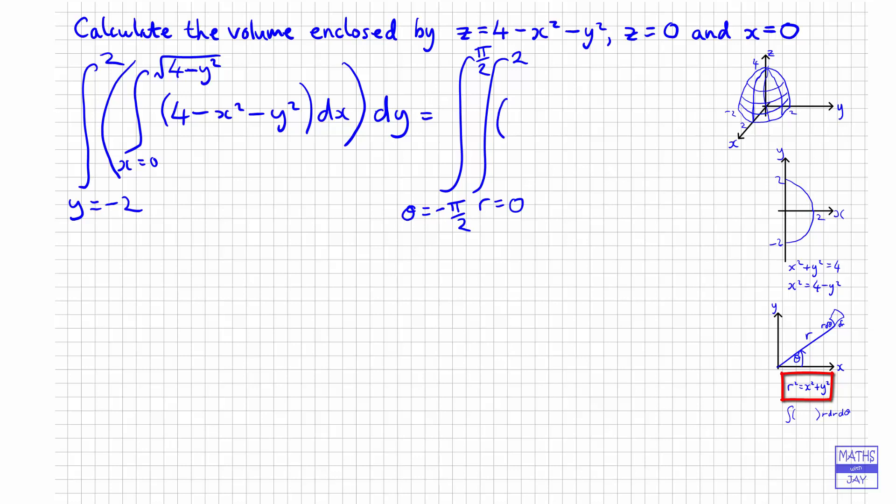And then x squared plus y squared is r squared. So we're integrating 4 minus r squared, because we're taking away x squared plus y squared. And then remember, it's not just dr d theta, but r dr d theta.